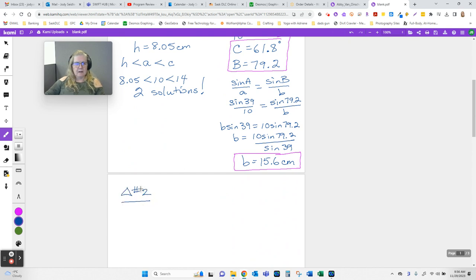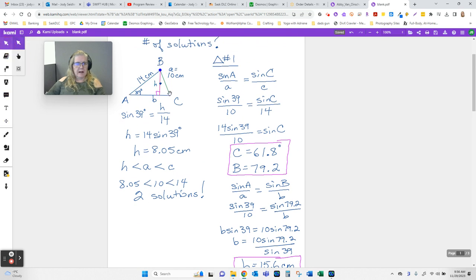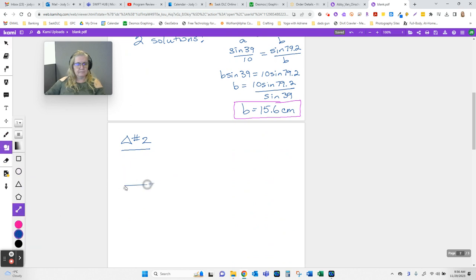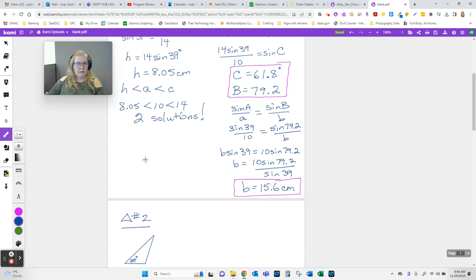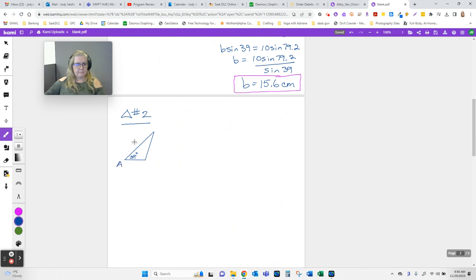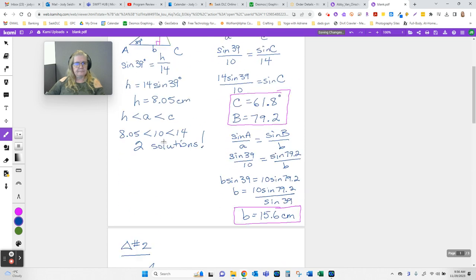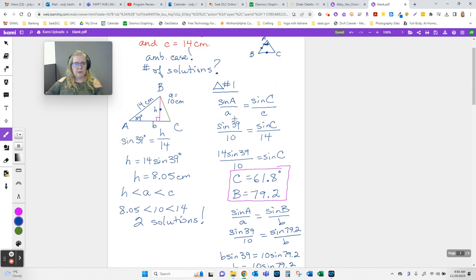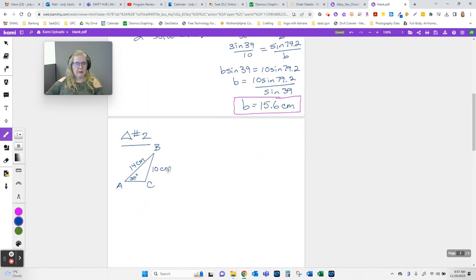Triangle number two. Now, triangle number two is what happens if this green line swings in here. Now, remember, side B we don't know the length of, so it could be that short. So what could be happening is the 39 could be in here. Make sure I get the numbers right. This is still 14 centimeters. This is still 10. And there's an A, B, and C. Now, notice that when we worked our way through and we found out the C was 61.8, right in here, that's not true anymore.